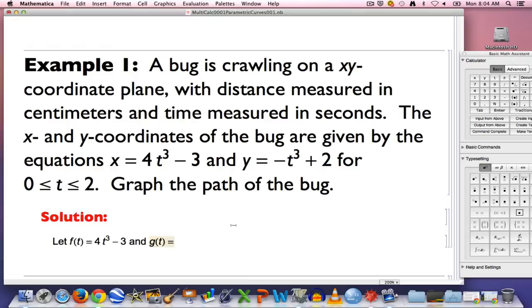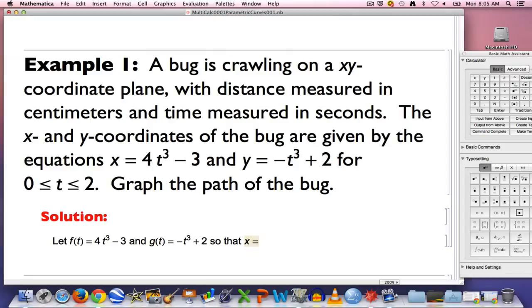So the output of g at a given input t is going to be -t³ + 2. And you should realize when you look at this expression that the t³ would get done first, then you'd put the minus sign in front of it, and then you'd add 2 to that. These functions then can be related to the system of parametric equations. In this way, x will be f(t) and y will be g(t).